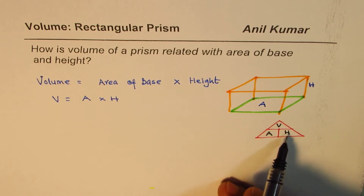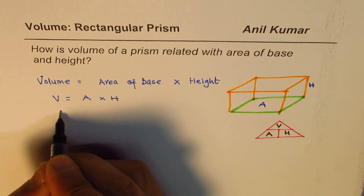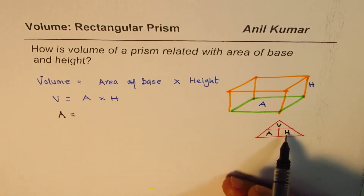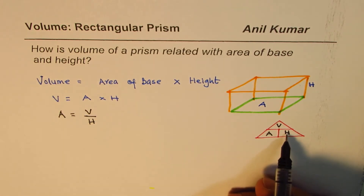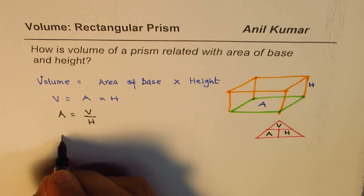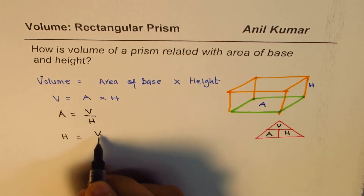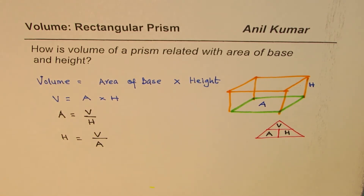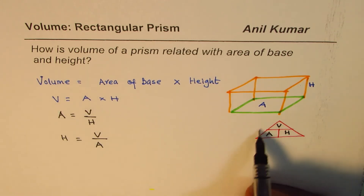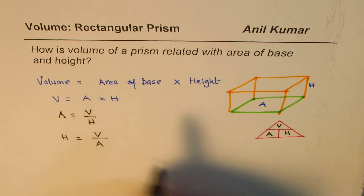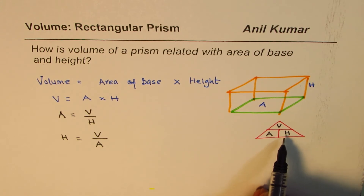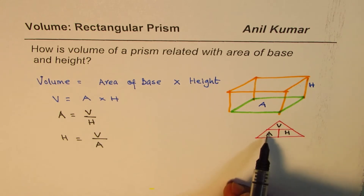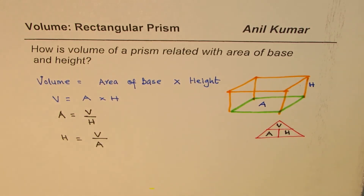This triangle helps us write the same formula in different ways. If I need to find area from volume and height, I rearrange: area equals volume divided by height. And height equals volume divided by area. So whenever you have a multiplication-type formula, you can use this triangle. Volume equals area times height; area equals volume divided by height; height equals volume divided by area.